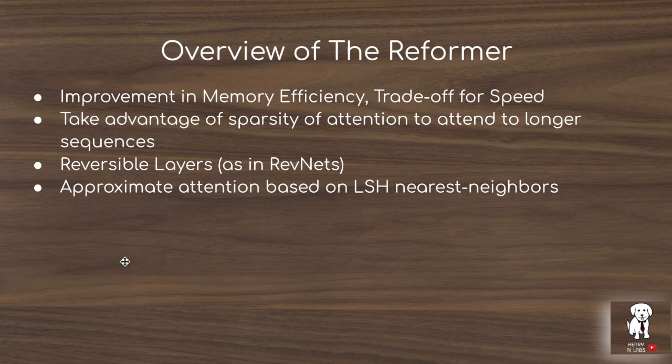The key idea in the Reformer, and in related papers like adaptive attention span from Facebook and sparse transformers from OpenAI, is taking advantage of the sparsity of attention to attend to longer sequences.